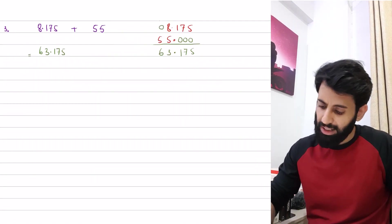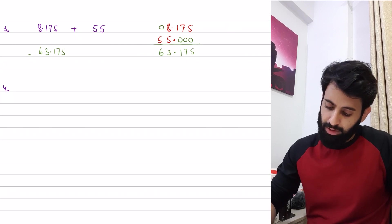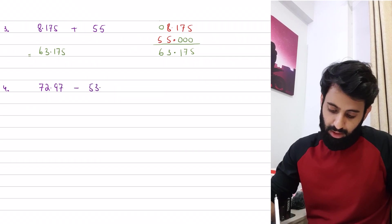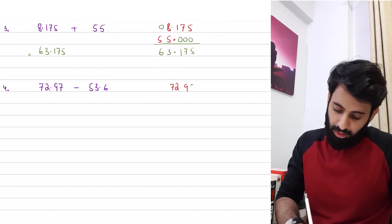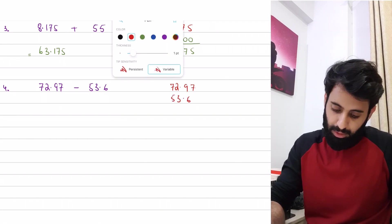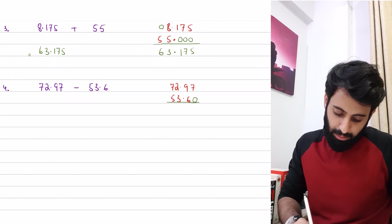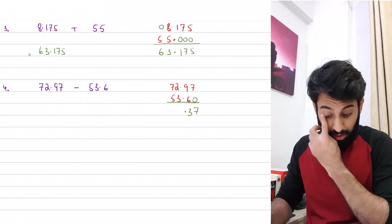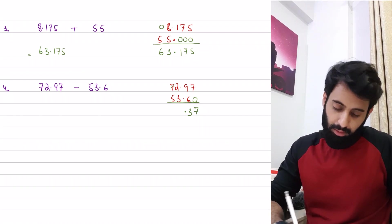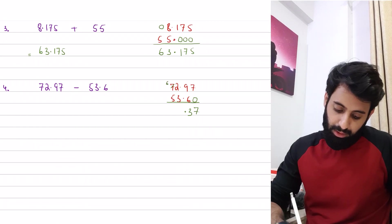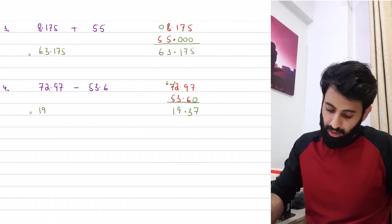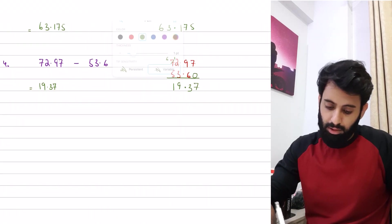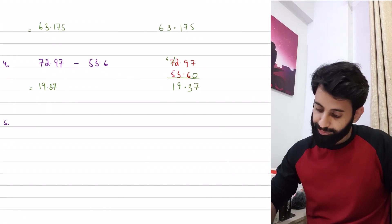Now let's do subtraction — it's exactly the same process. For example: 72.97 minus 53.6. Write 72.97, then 53.6 aligned, and fill the missing place with 0. So 7 minus 0 is 7; 9 minus 6 is 3; you can't do 2 minus 3, so reduce 7 to 6 and give 1 to the 2, making it 12; 12 minus 3 is 9; 6 minus 5 is 1. The answer is 19.37.